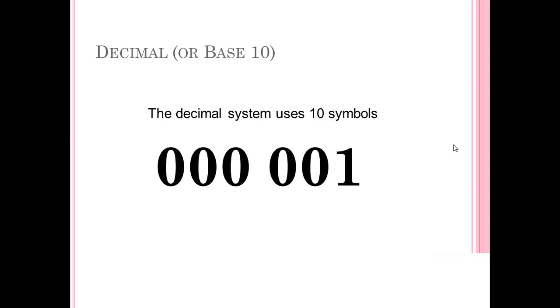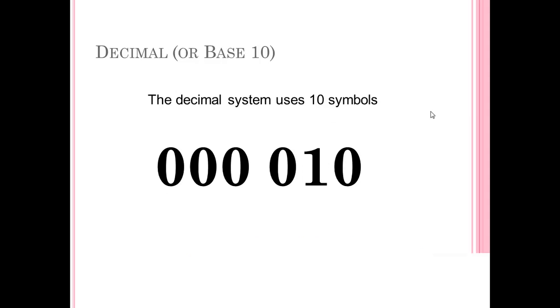We count 1, 2, 3. Every time we're incrementing the least significant digit, in our case, the rightmost digit. Least significant is the smallest. Now 4, 5, 6, 7, 8, 9. Now what's happened? We run out of symbols. So what do we do? We change the 9 back to 0 and change the next one to 1. Now we have 10 and we begin to count again.